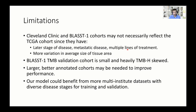There are limitations to our study. The Cleveland Clinic and BLAST cohorts may not necessarily reflect the TCGA cohort, as they have later stage and metastatic disease with multiple lines of treatment and different tissue areas. The BLAST-1 TMB validation cohort is relatively small and heavily TMB-high skewed. We need larger and better annotated cohorts, which we are working on, including sequencing some of our tissue blocks. Our model could also benefit from more multi-institute datasets with diverse disease stages for training and validation.